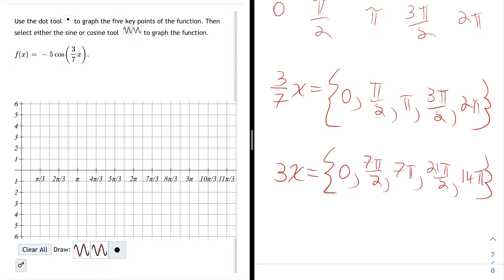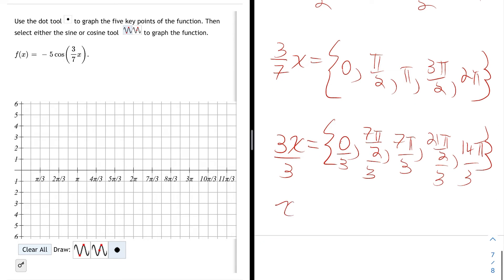Then lastly I just divide everything by 3. And I'll get that x is equal to 0 divided by 3, which is 0. 7π/2 divided by 3 is 7π/6. 7π/3 is just itself. 21π/2 divided by 3 is 21π/6. And then 14π/3 is just itself.